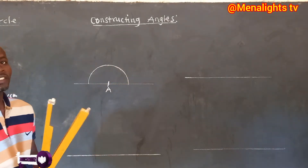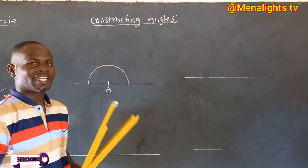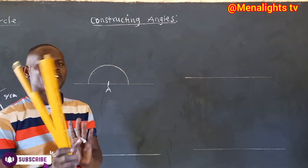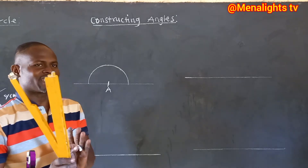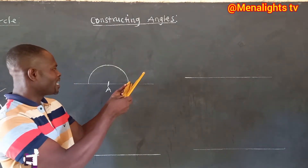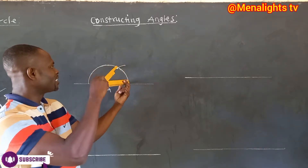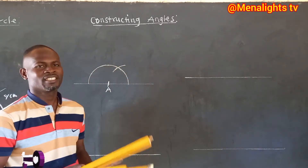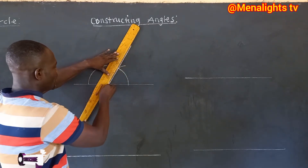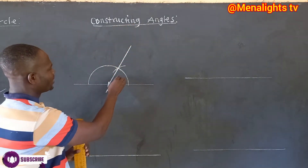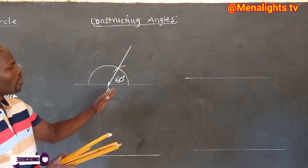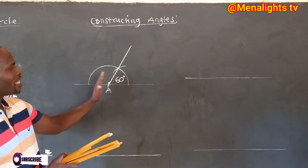A semi-circle has an angle of 180 degrees. So the radius that you use to draw the semi-circle — don't close the compass — you stand here and make an arc, and that is 60 degrees. You join through, and the angle from there is 60 degrees.